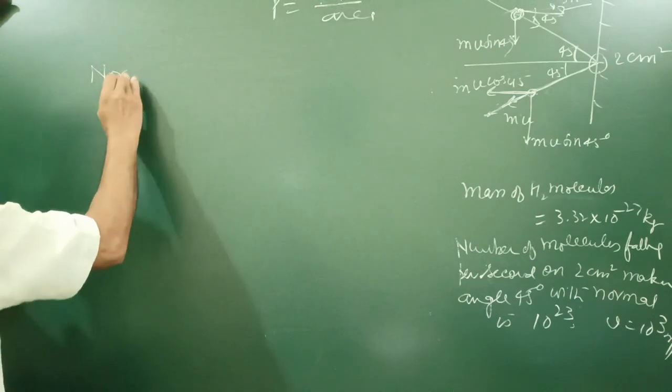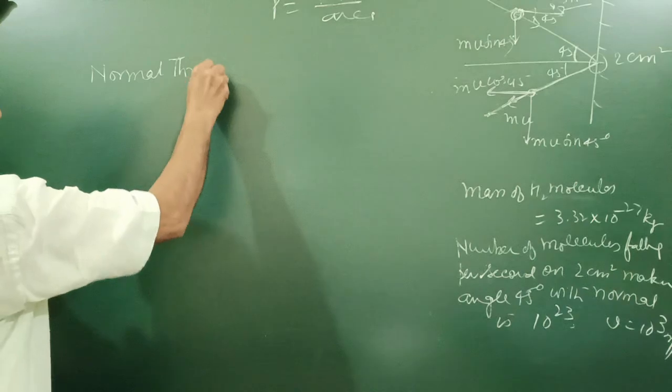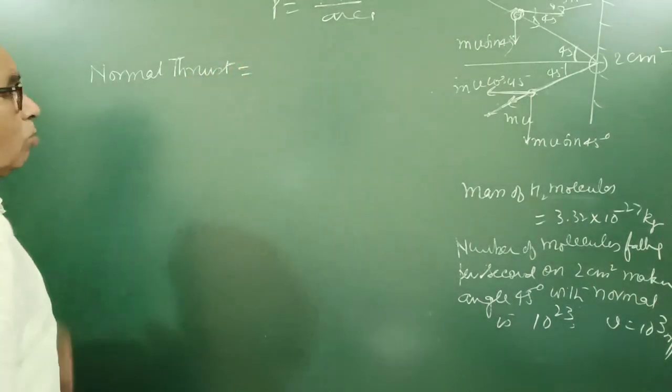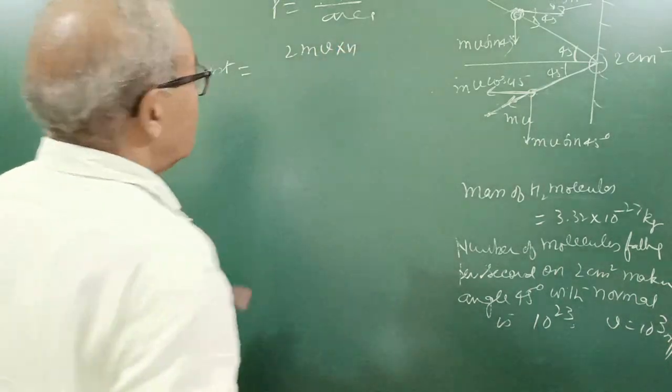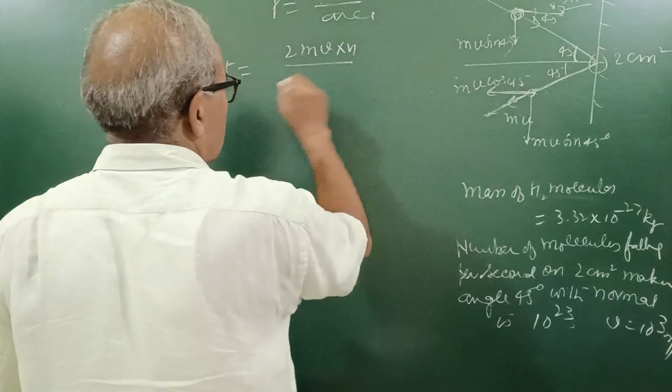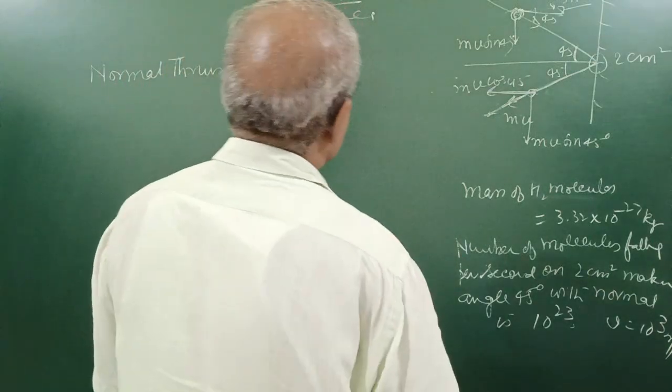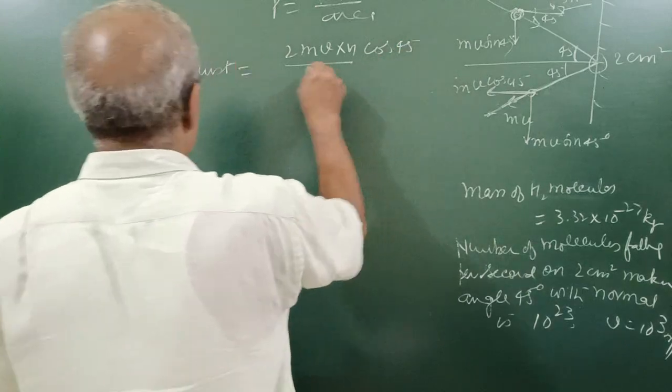Normal thrust here is equal to change in momentum per unit time: 2mv times n, number of molecules, upon time, times cos 45. And if per second we write...